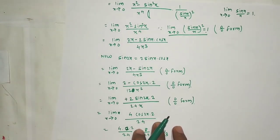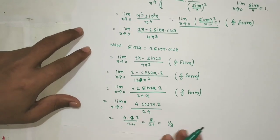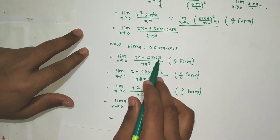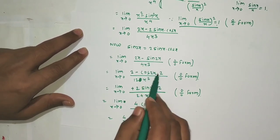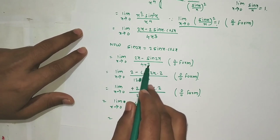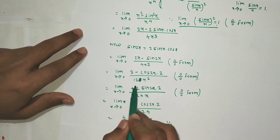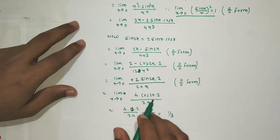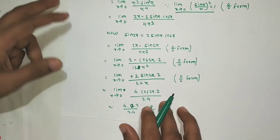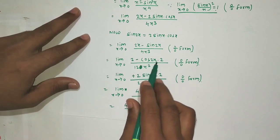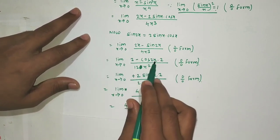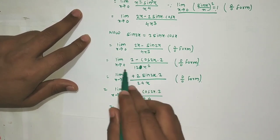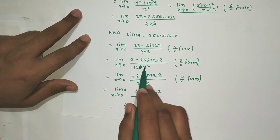Applying L'Hôpital's rule: derivative of (2x - sin2x) is 2 - 2cos(2x), and derivative of 4x³ is 12x². Putting x=0: numerator = 2 - 2cos(0) = 2 - 2 = 0, denominator = 12·0 = 0. Still 0/0 form, so we apply L'Hôpital's rule once more.